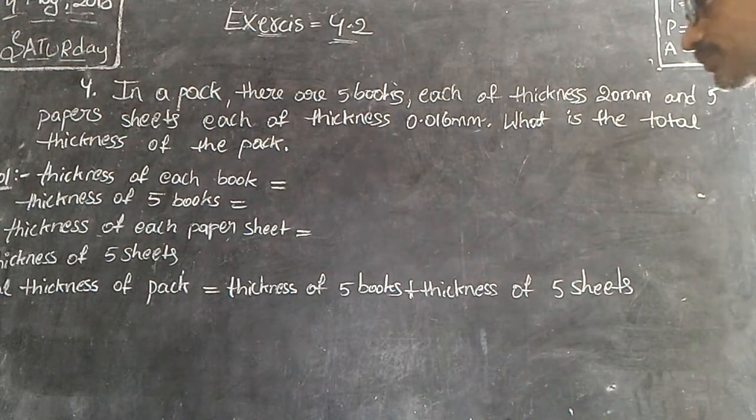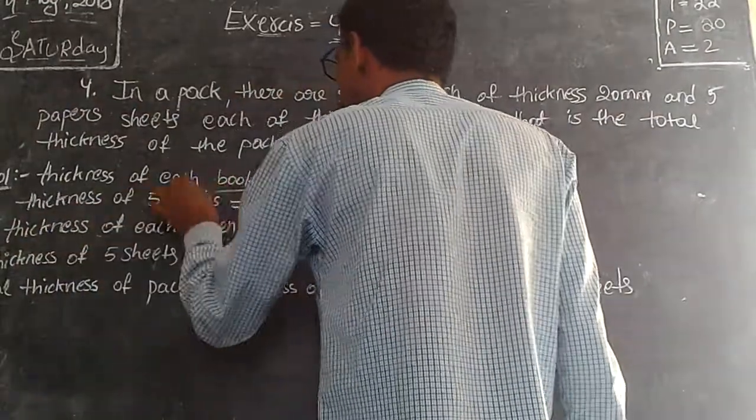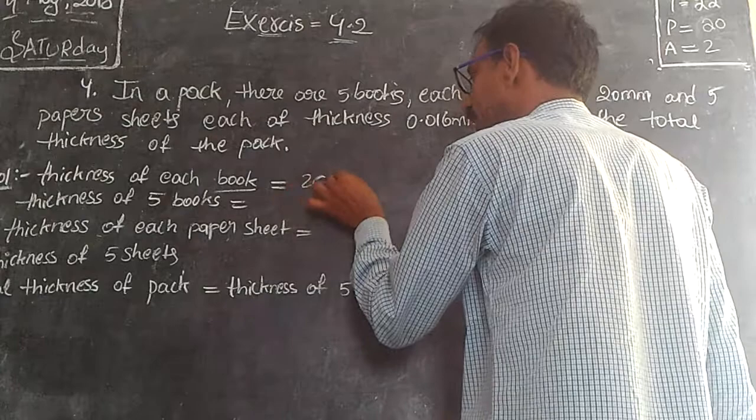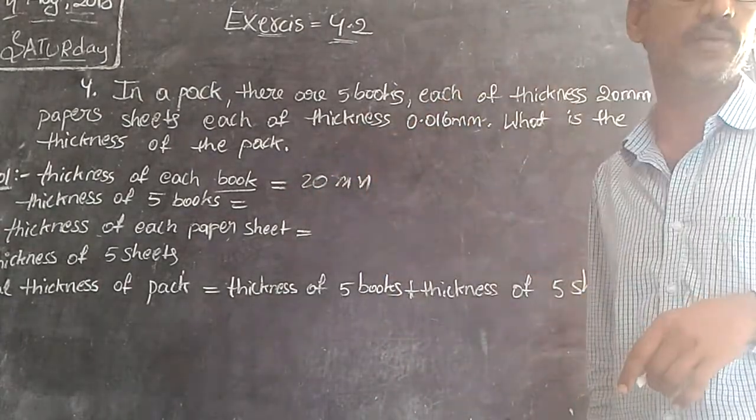Very simple. Thickness of each book is 20 mm. What is the total thickness of 5 books?